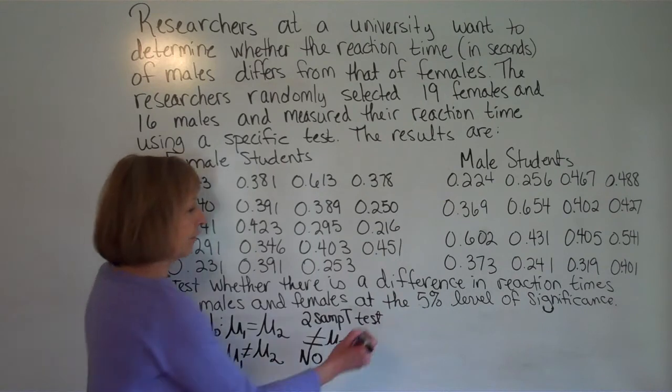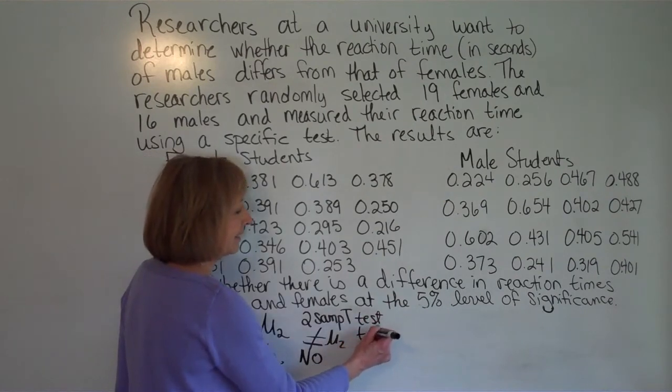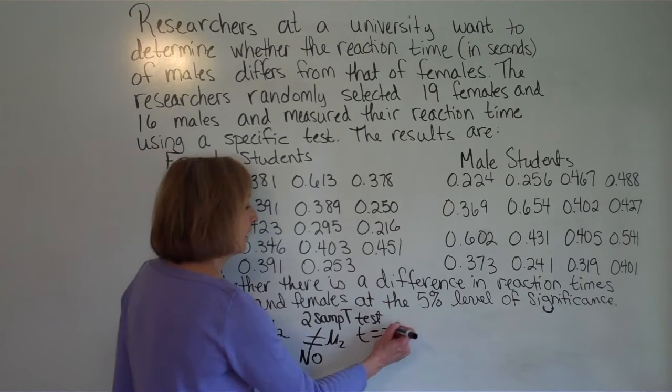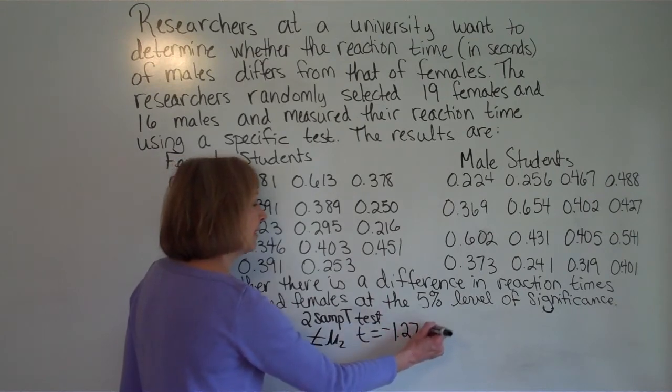And then after that it's going to give you the test statistic t. So t is equal to negative 1.2787.